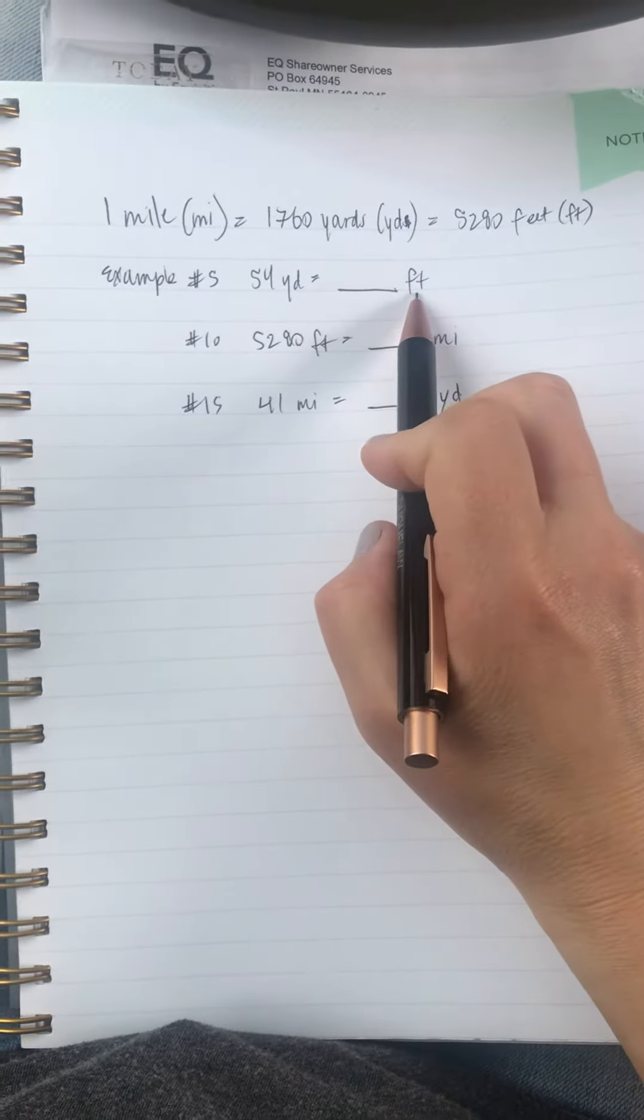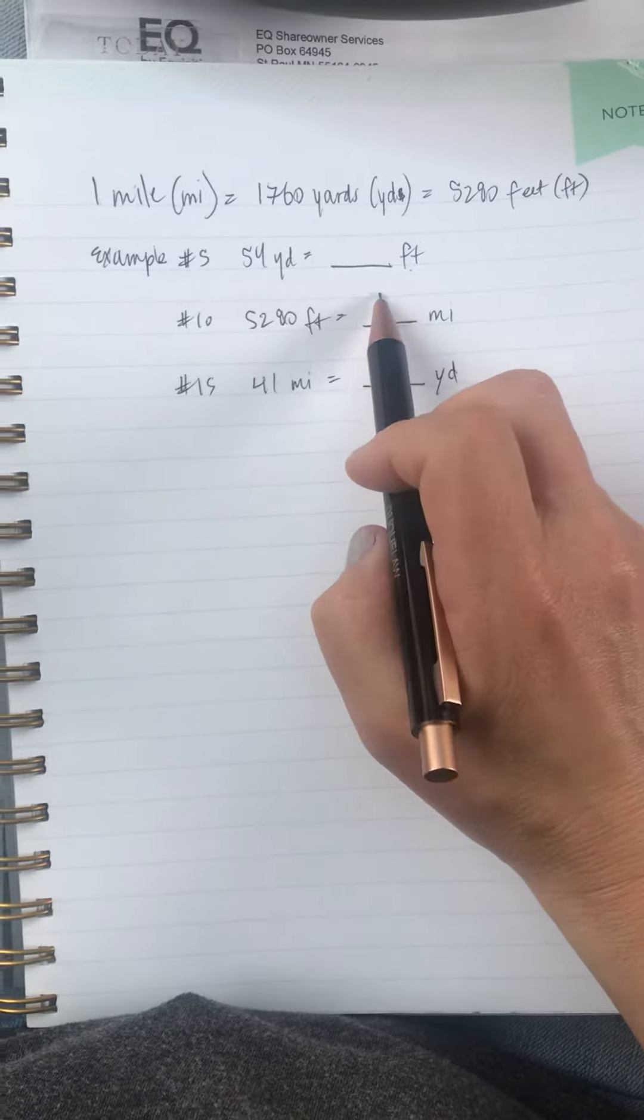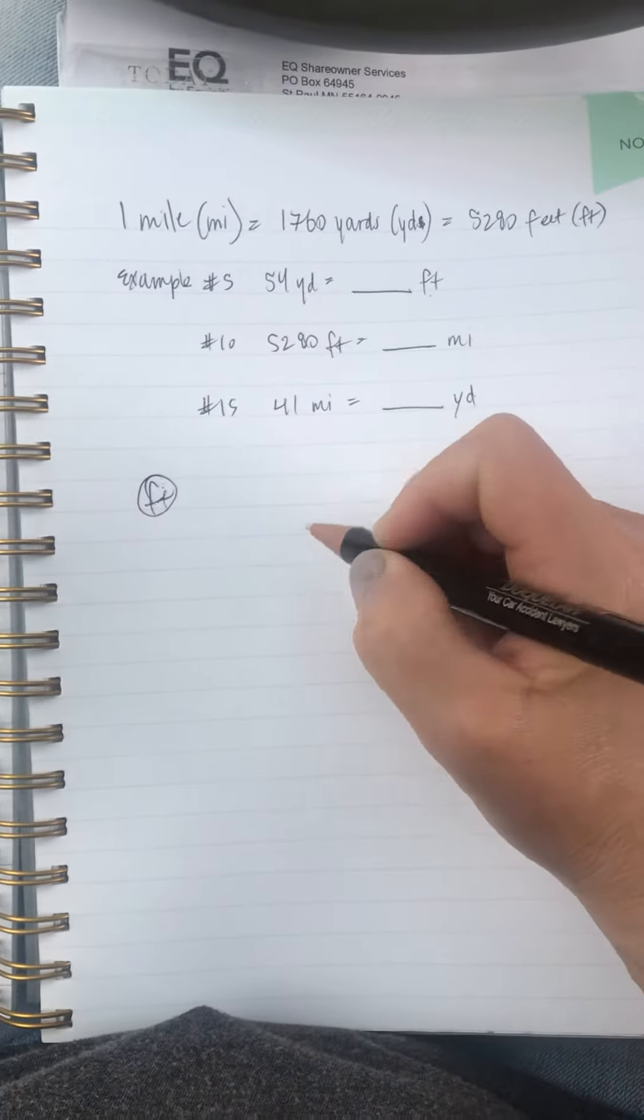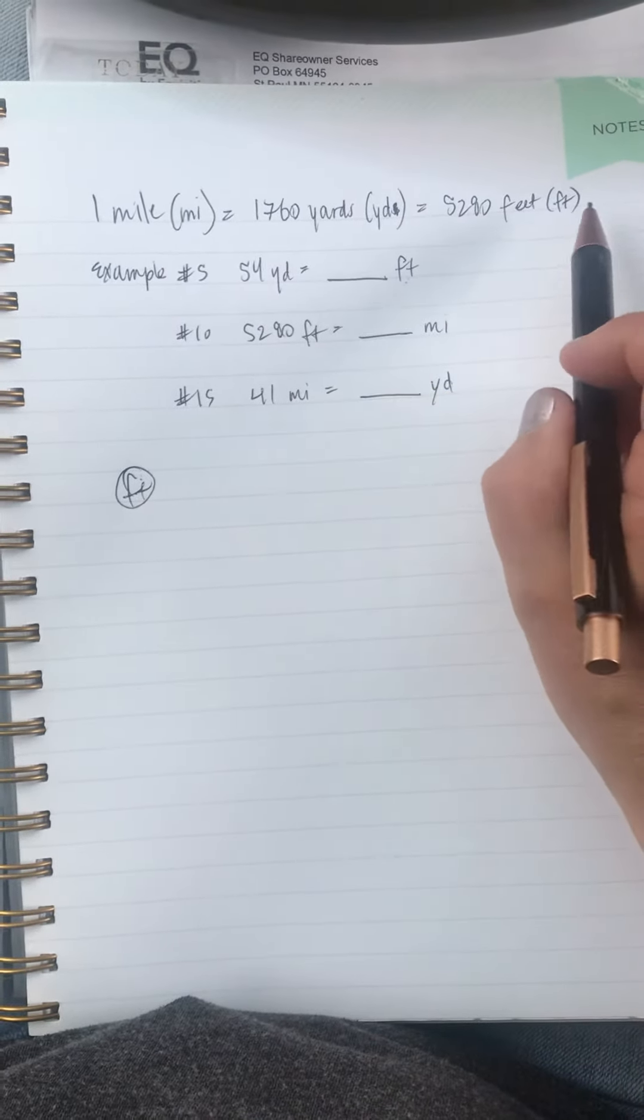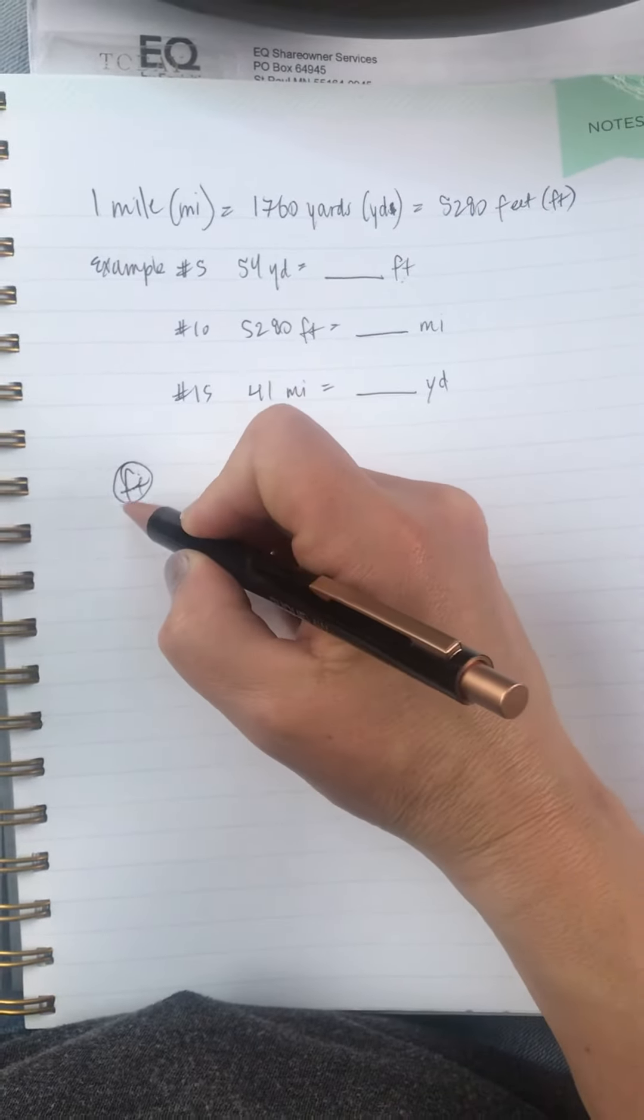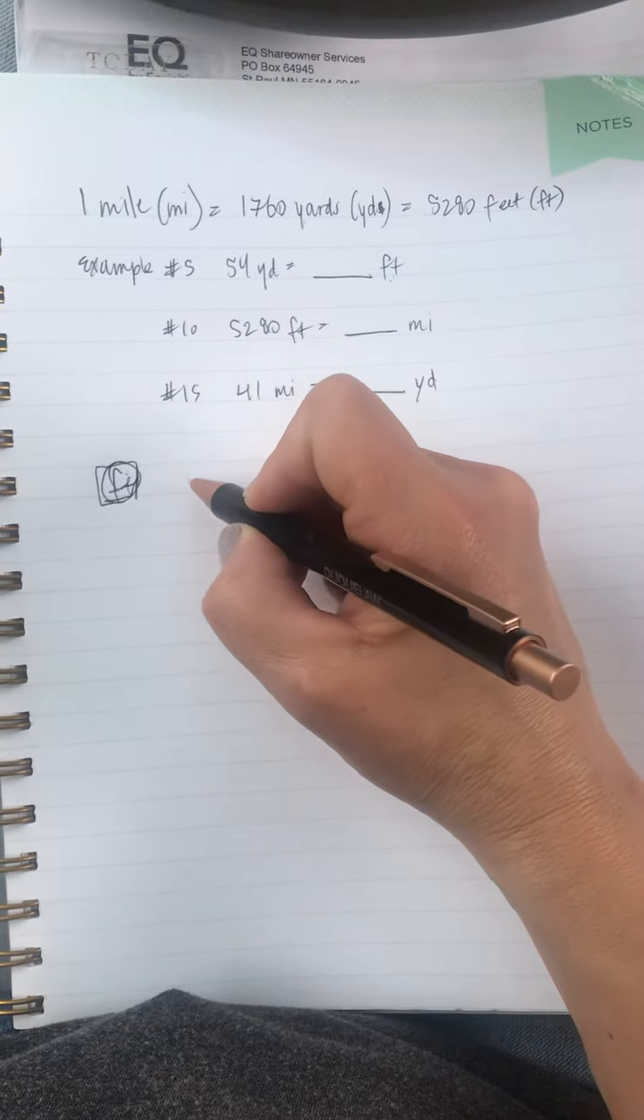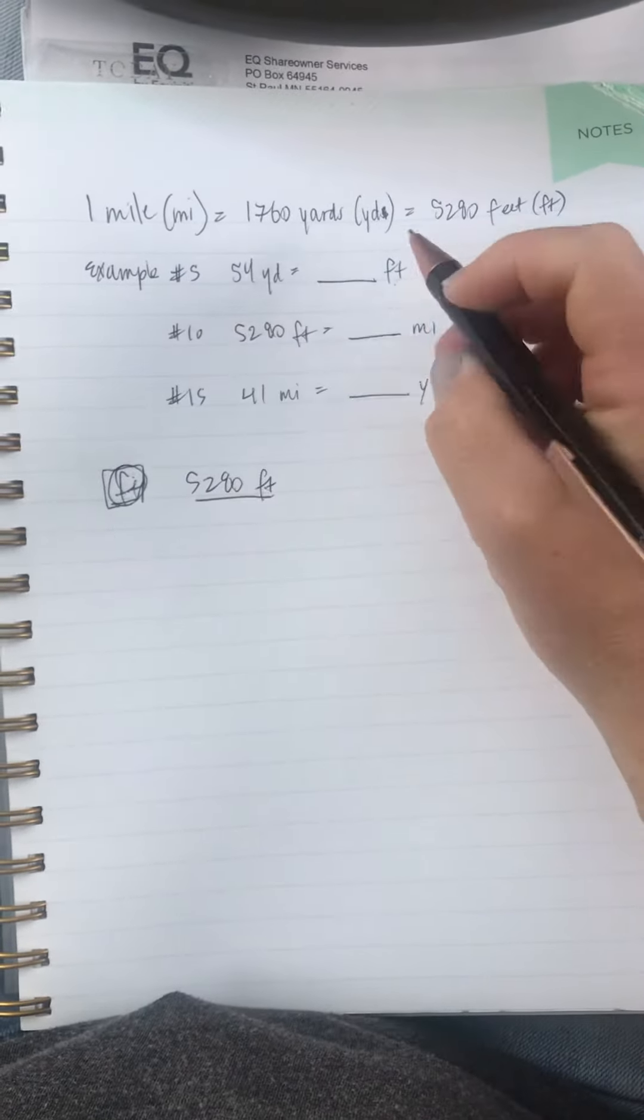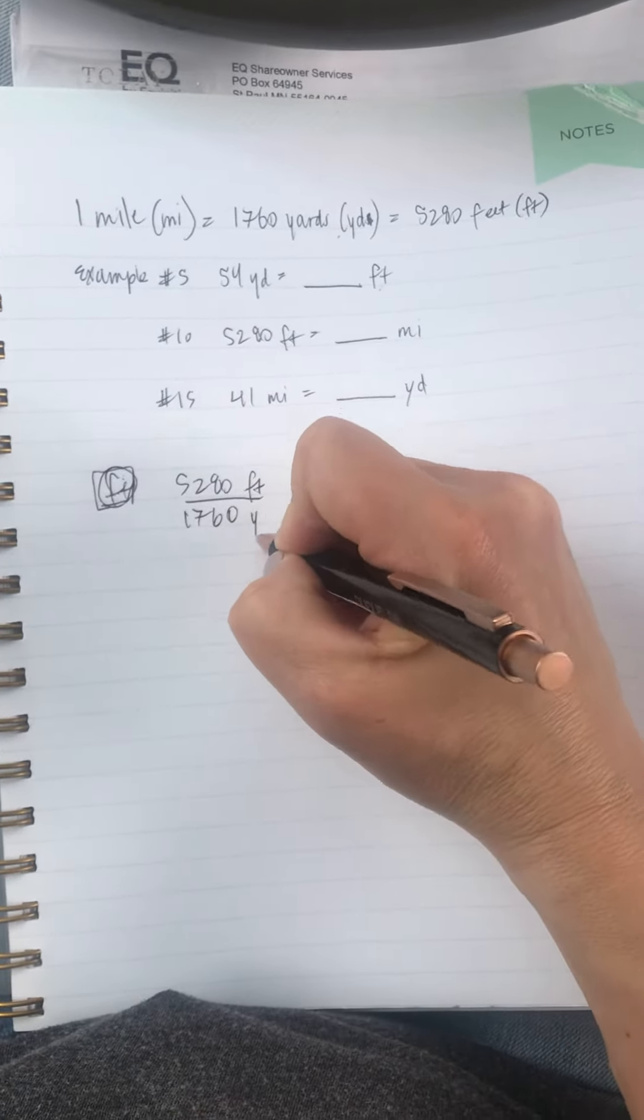54 yards equals how many feet? So the way I do this is I always write down feet. Feet is what I want, so I want that to be on the numerator. And what do I know? When going to feet to yards, it's right up here. We have this number is the same thing as that. So if I want this always on the top, then that means I have to start with what I know, 5280 feet is equal to 1760 yards.